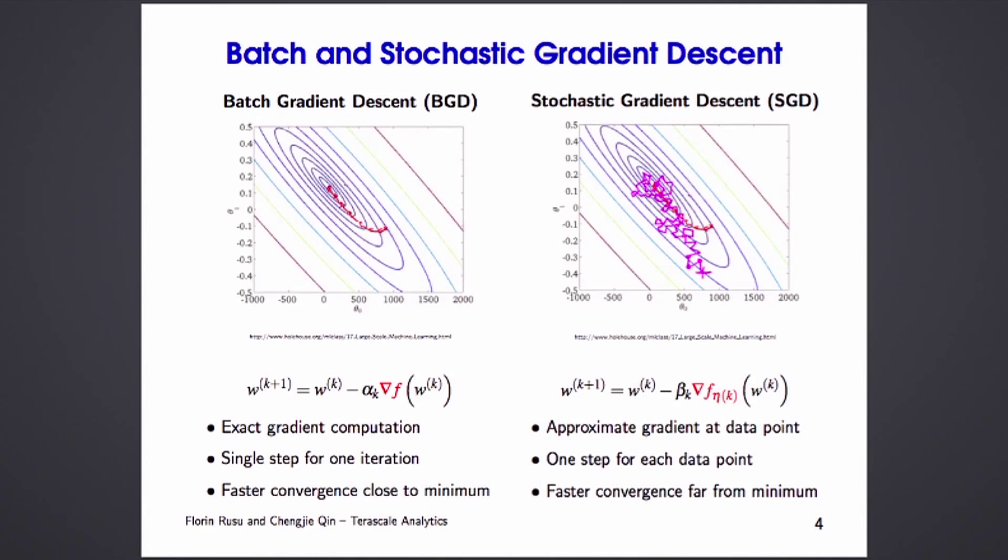Each of them is good in a particular area. For example, stochastic gradient descent converges much faster when you are far away from the minimum. Batch gradient descent, in theory, is known to converge much better when you are close to the minimum. Even if people kind of use stochastic gradient descent largely, I would say that you should not discard the batch gradient descent idea.